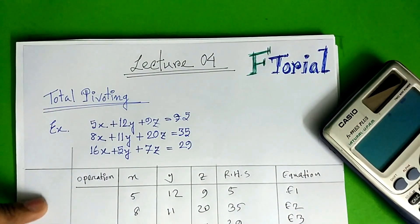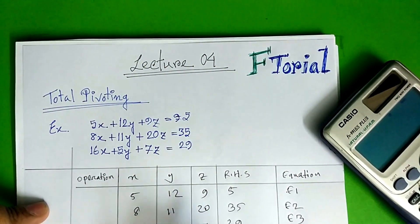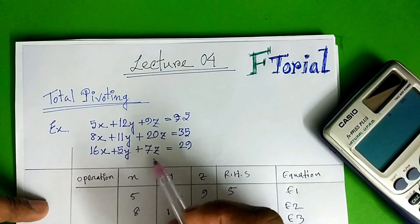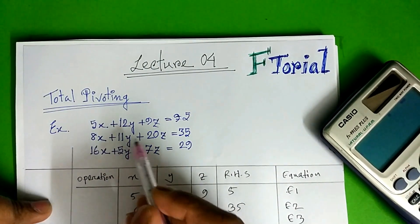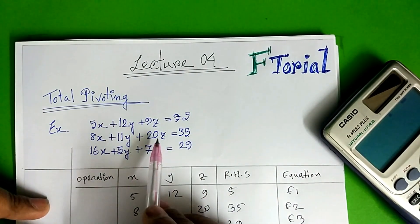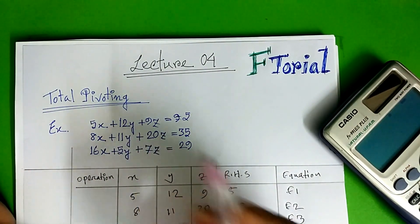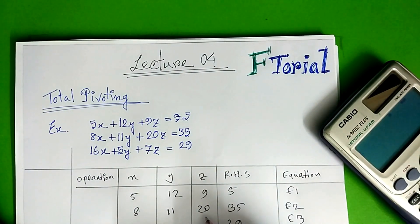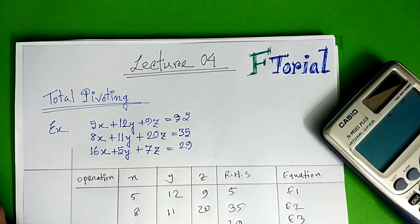The total pivoting method is based on total pivoting. We will return to the first one, then the second one. I can see as I'm moving into one point the product of the product — equation 2 — I'm making a product.